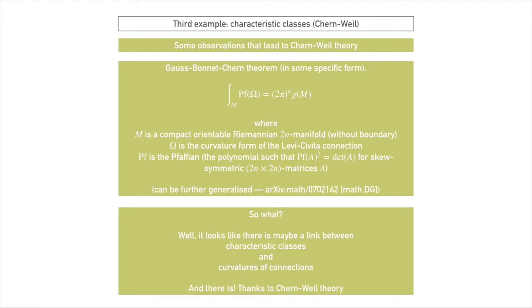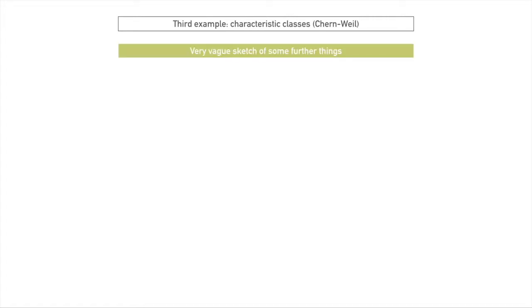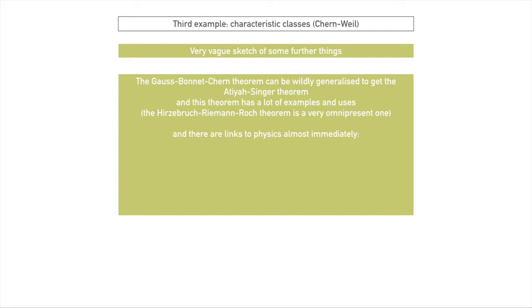Let's talk a little bit about some further things, some ways we can go beyond this. The Gauss-Bonnet-Chern theorem can be generalized to get what's called the Atiyah-Singer theorem, or the Atiyah-Singer index theorem, and this theorem is kind of everywhere throughout maths and physics. For algebraic geometers, the Hirzebruch-Riemann-Roch theorem is an example of the Atiyah-Singer theorem, which algebraic geometers use all the time. Within physics, there are some pretty immediate links — there's a very famous paper about how the Atiyah-Singer theorem can be derived from the heat equation, and you can also derive it from some elementary properties of quantum mechanical supersymmetric systems.